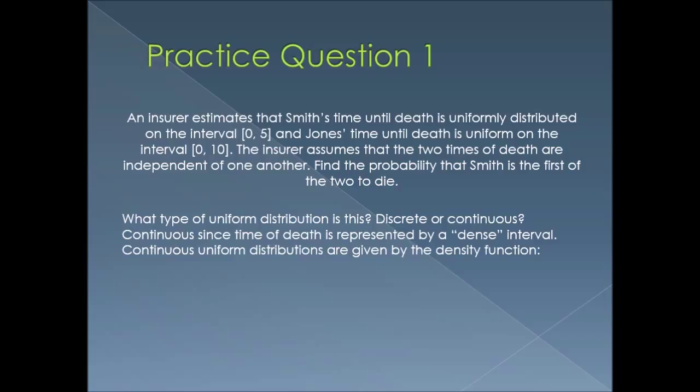To begin, what type of uniform distribution is this? Is this a discrete or a continuous distribution? We know that it's continuous because time of death is represented by a dense interval. That means Smith and Jones can die at any point in their interval — they're not going at set guideposts.